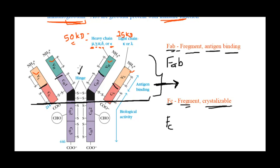Finally, we have the hinge region, which gives flexibility to the antibody so that it can bind in the best way possible with the antigen. That covers the overview of antibody structure — all the key labels and terms, and why they are named so. Hopefully this video made it clear what each term means.